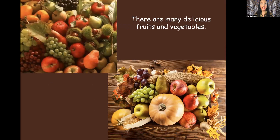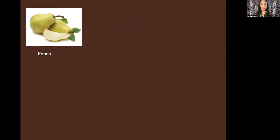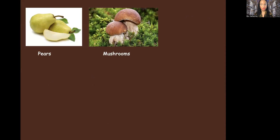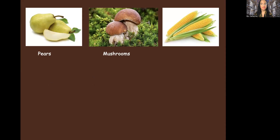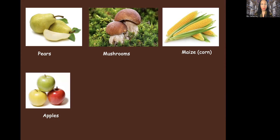There are many delicious fruits and vegetables during autumn or fall. Why is it called fall again? Because the leaves fell from the trees. So what do you think these are? Pears. We can either say maize or corn. Apples — what kind of apples are these? Granny Smith is the green one. Red Delicious — or it could be a Macintosh or another red apple. And what's the yellow one called? Golden apple.